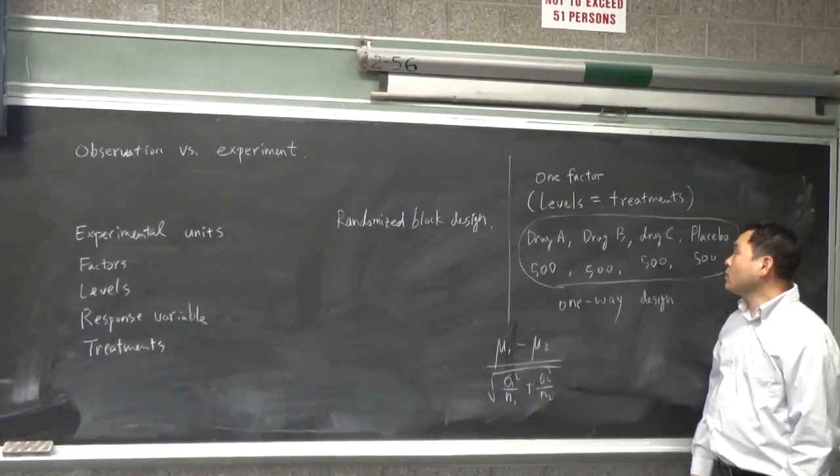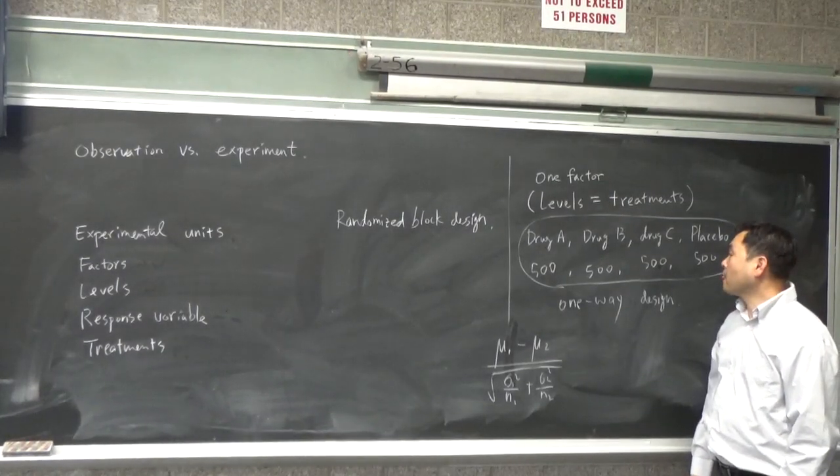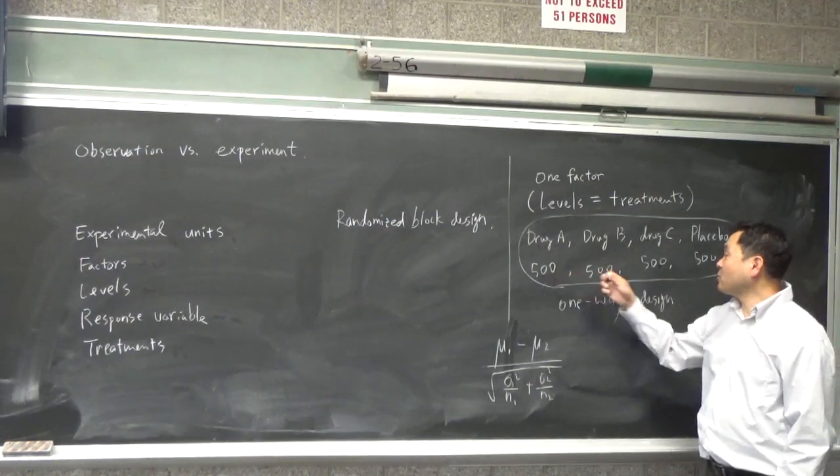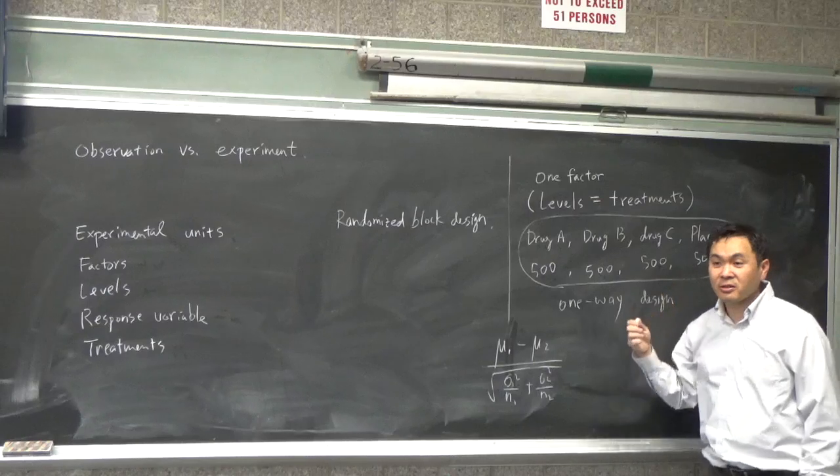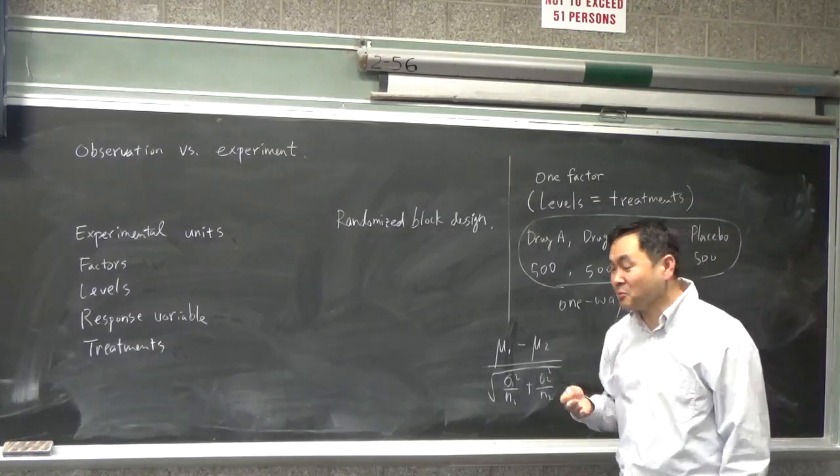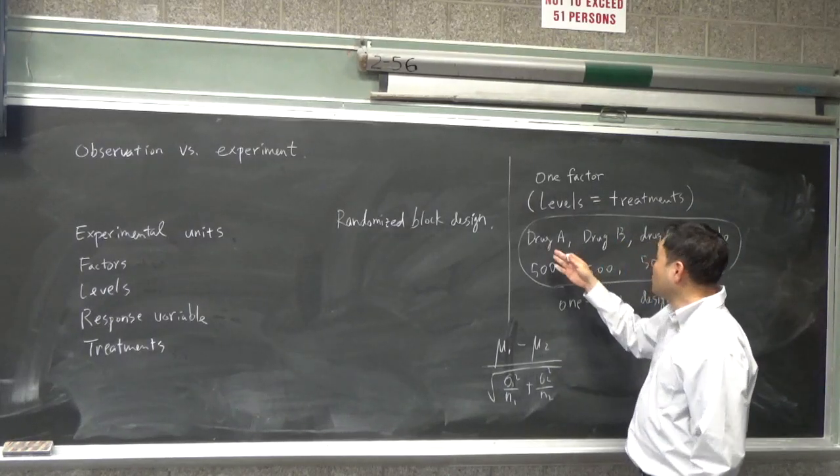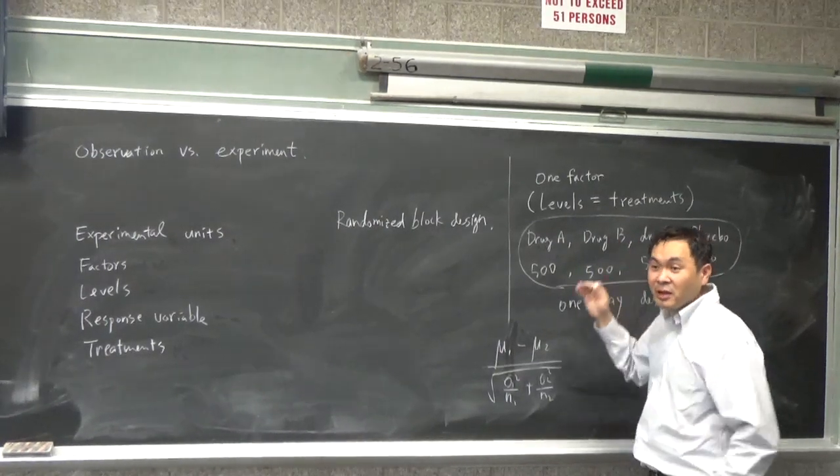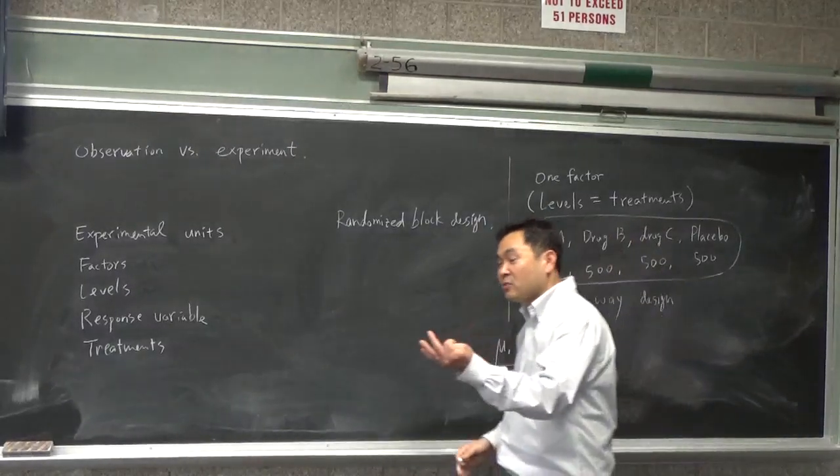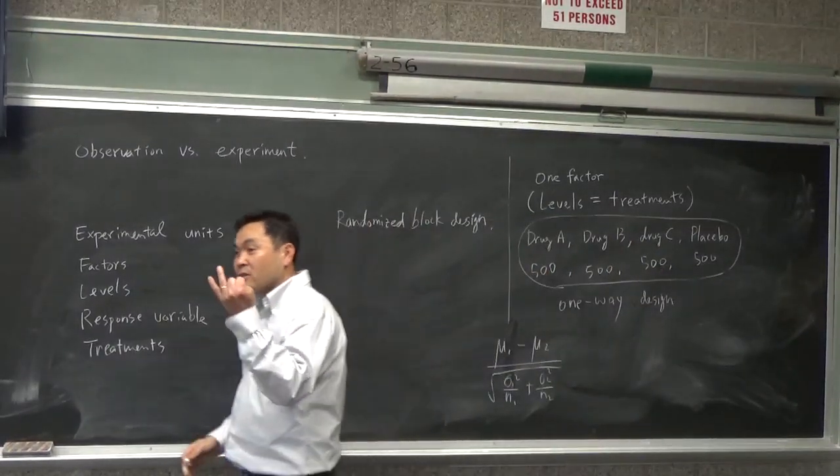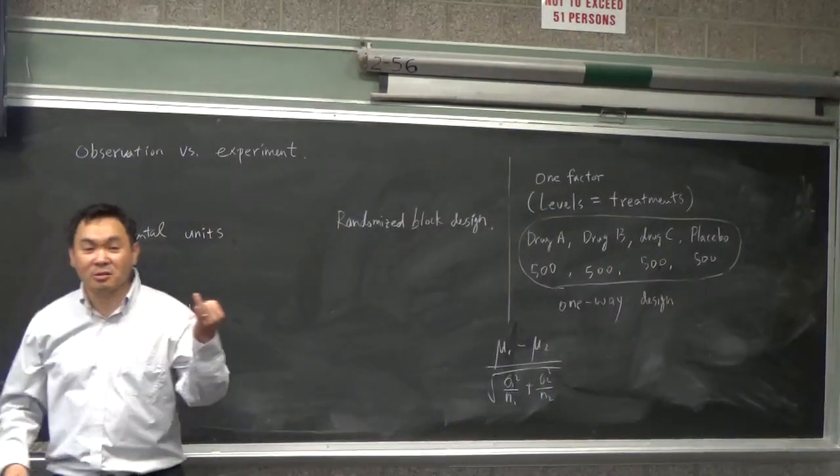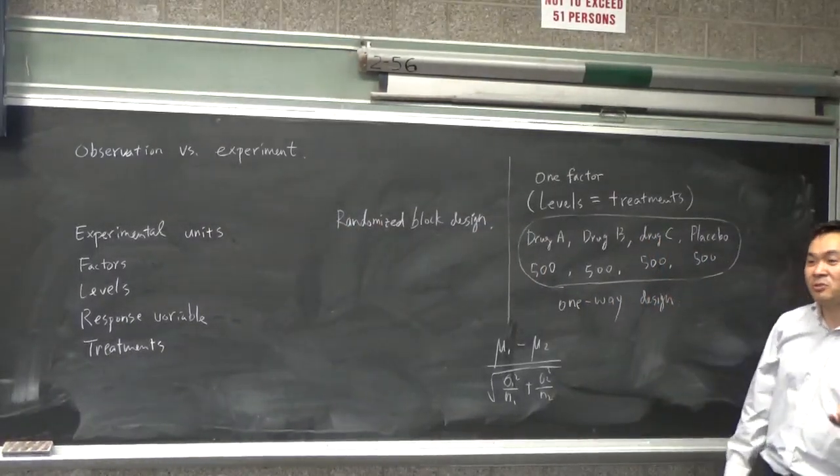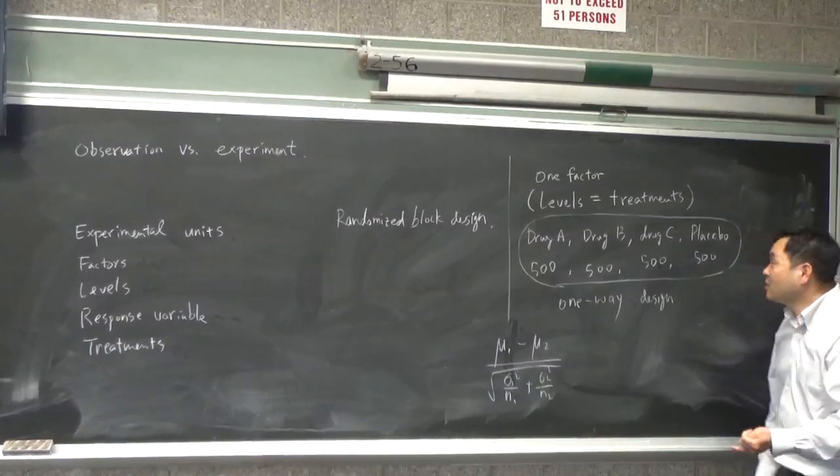rather than just assigning 500 people separately, you make some hypothesis. Maybe the way that people respond differently with these different drugs depends on age, race, sex, and what else? Height, weight, maybe that, okay, yeah. Obese or not obese, something like that, okay? Alright, so